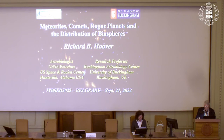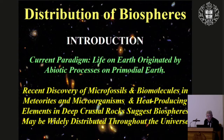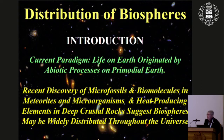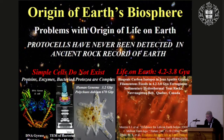Thank you very much. I'm delighted to be here. The current paradigm is that life on Earth originated on Earth by abiotic processes on primordial Earth. Recent discoveries of microfossils and biomolecules in meteorites and of microorganisms in deep crustal rocks and deep ices suggest that biospheres may be widely distributed throughout the universe. The problem with the abiotic origin of life is that protocells have never been detected in any ancient rock records — simple cells simply do not exist.